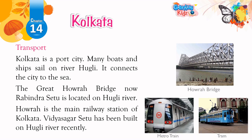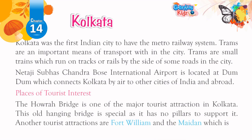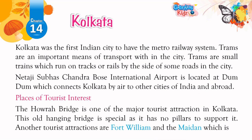Transport. Kolkata is a port city. Many boats and ships sail on River Hooghly, connecting the city to the sea. The great Howrah Bridge, now called Rabindra Setu, is located on the Hooghly River. Howrah is the main railway station of Kolkata. Vidyasagar Setu has been built on the Hooghly River recently. Kolkata was the first Indian city to have the metro railway system.